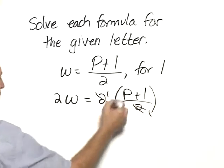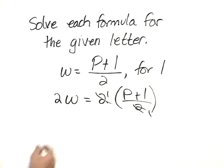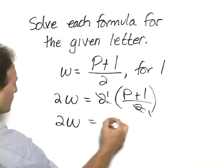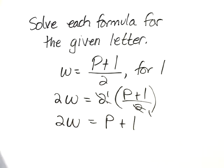2 divides into 2 one time, and so therefore we have 2W equals P plus L. And now we would subtract P from both sides.